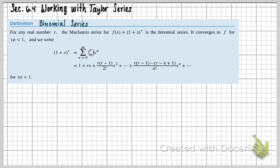This says for any real number R, the Maclaurin series for f of x equaling 1 plus x to the R is the binomial series. It converges to f for the absolute value of x less than 1. So then here it is, and we write the series down here.